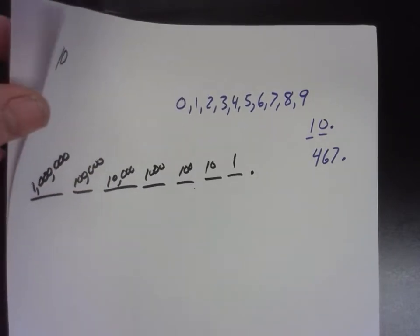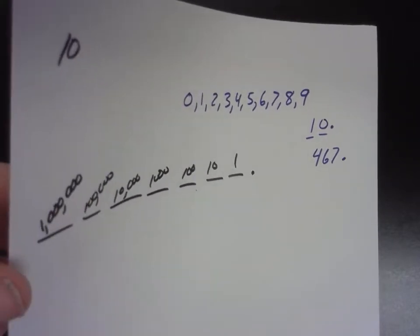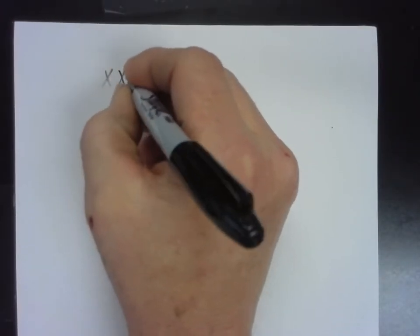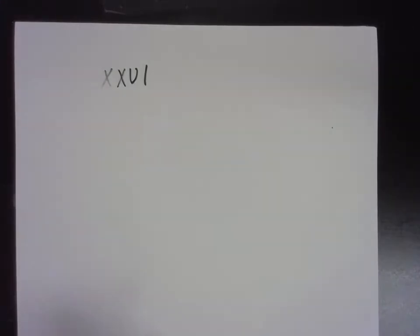What would happen if we didn't have the decimal system? Let's say we use Roman numerals instead of Hindu-Arabic numerals. Do you guys know what that is? Who knows what it is? 14? It's 16. You're getting closer. It is 26.